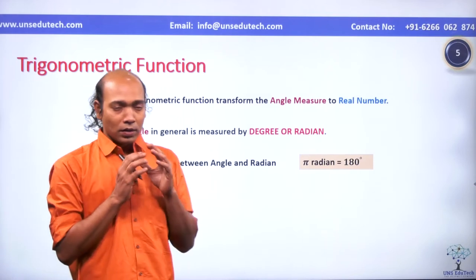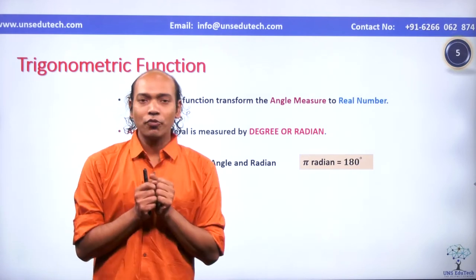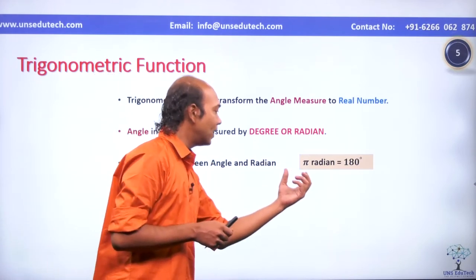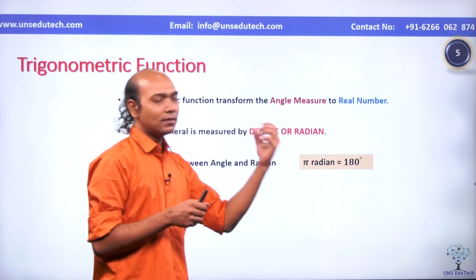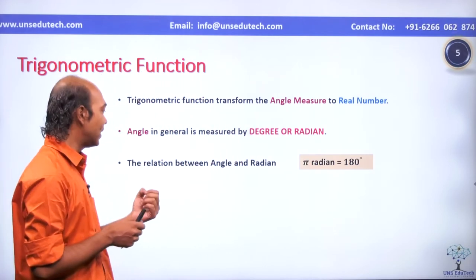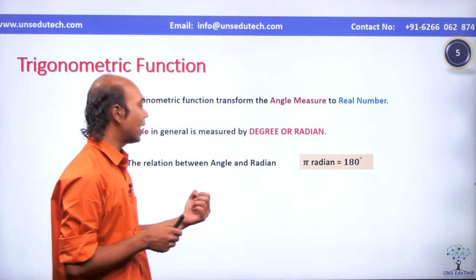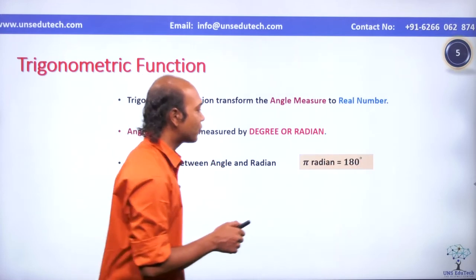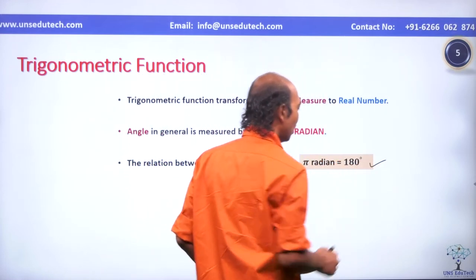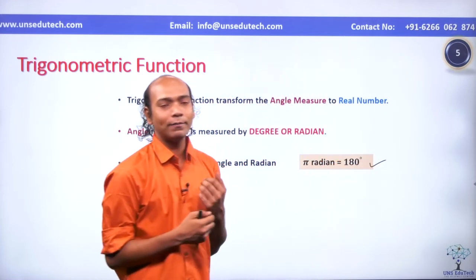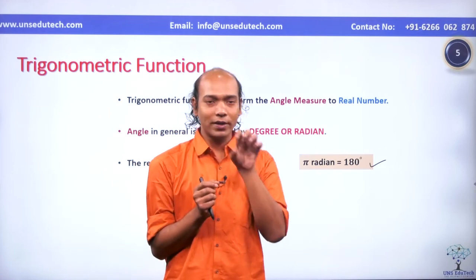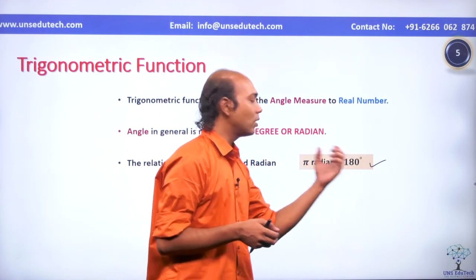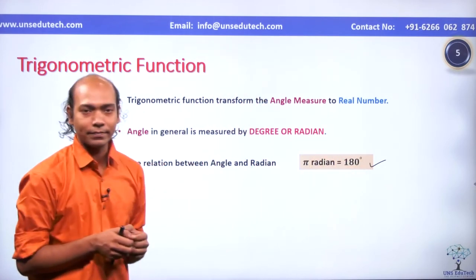The relation between angle in radian measure and degree measure is: π radian equals 180 degrees. Remember this concept — whenever we have to convert values from radian to degree, we use 180 degrees equals π radian.